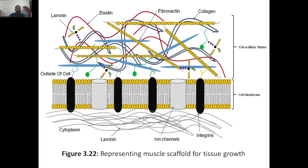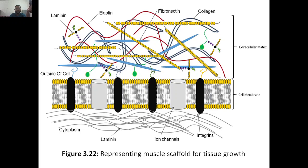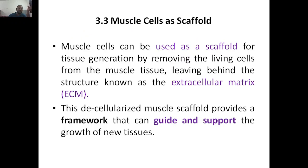Once you remove all the cells from the muscle, you are left with the extracellular matrix which is decellularized. There is a lot of space where you can incorporate different cells so that those cells will grow — that is the principle of muscle cells as scaffold.